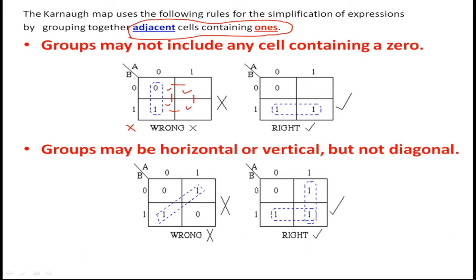Here we can see there is a one present in the cell where A=0 and B=1, and there is a one present in the adjacent cell — since these two cells contain ones and are adjacent to each other, we can group these two ones. This is correct, whereas grouping a zero with a one is wrong. Only cells which contain ones should be grouped.